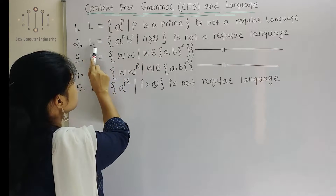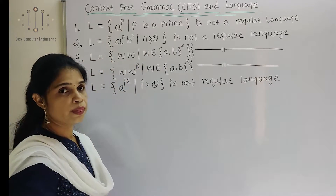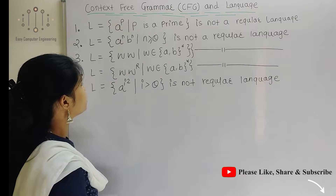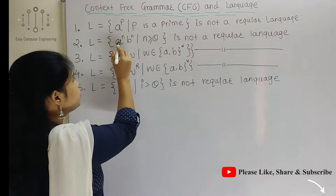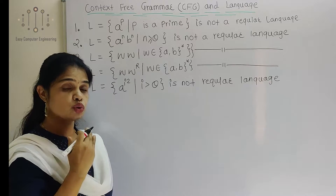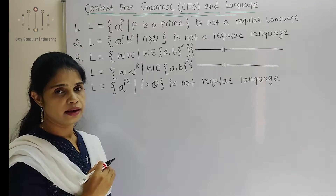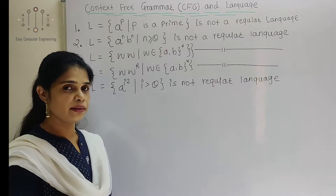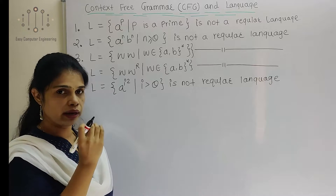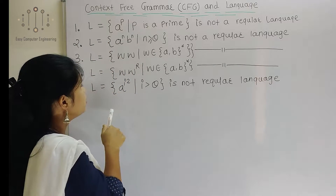One more example is L equals A raised to N, B raised to N. In this example, whatever the number of A's, the number of B's must be the same. We cannot store how many A's are there and then count that many again. So this is not a regular language.